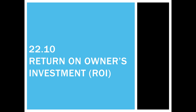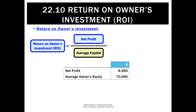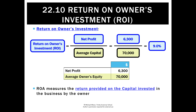Return on Owners Investment or ROI is a really useful ratio. We calculate it by taking our net profit and dividing it by average capital. Average capital is simply the capital at the beginning and the capital at the end of the period, averaged. So in this case, we'd be taking a net profit of 6,300, dividing it by average owner's equity of 70,000, and that equals an ROI of 9%.